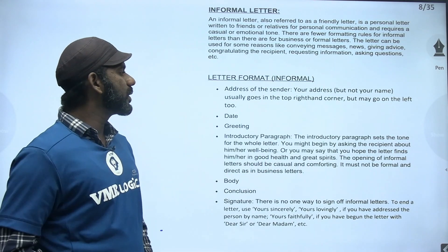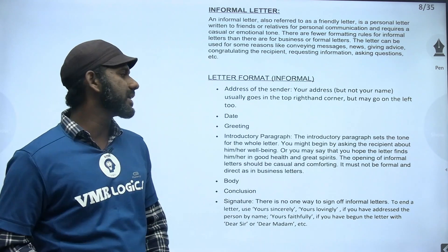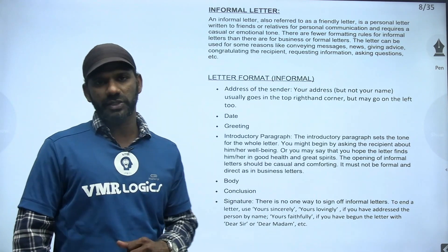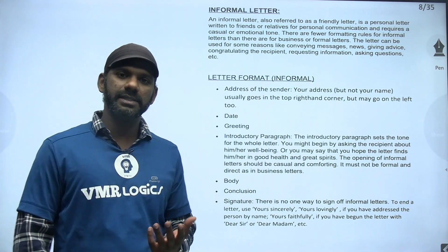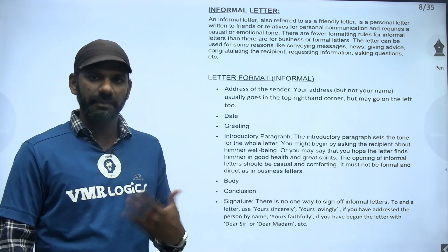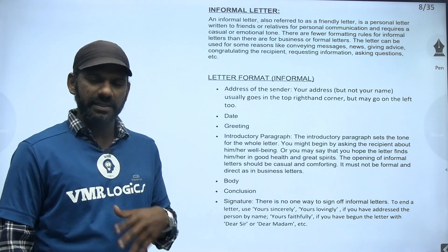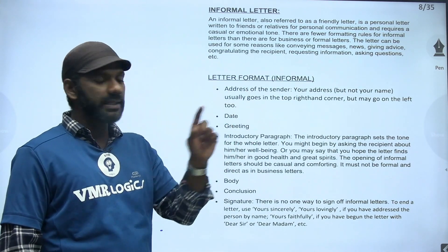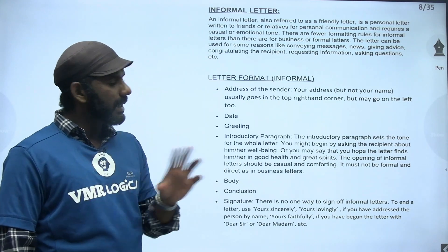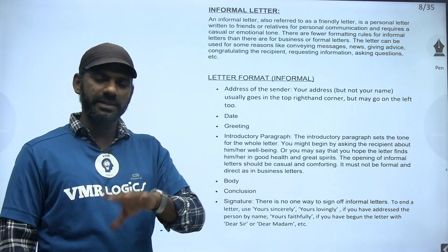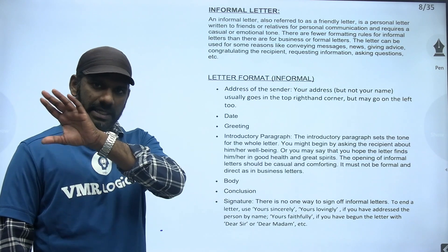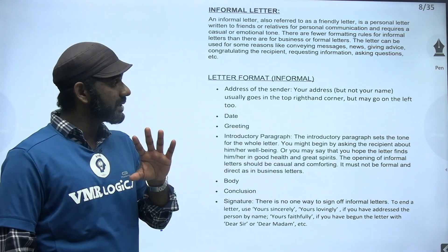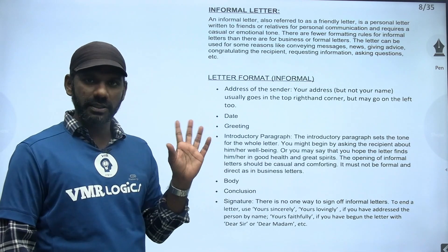Your address usually goes in the top right-hand corner, but may go on the left as well. There are many formats for formal and personal letters. We'll go for only one format — the NCERT one. The sender's address can go on the top right-hand corner or the top left-hand corner; both are fine.